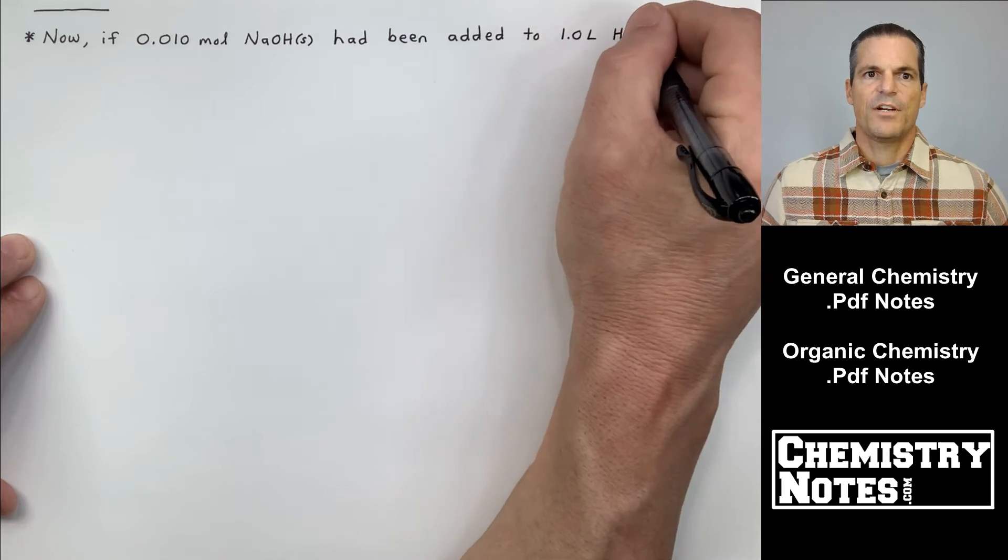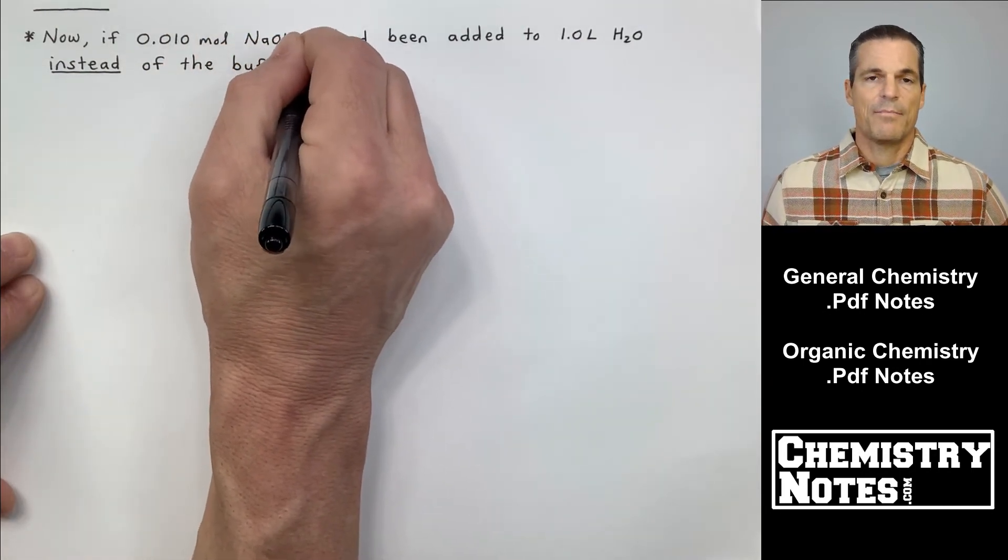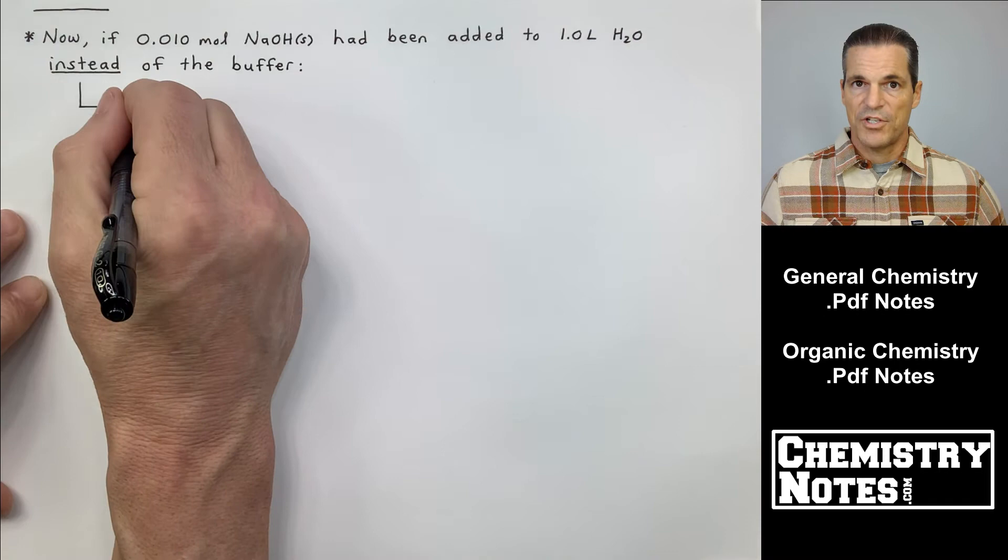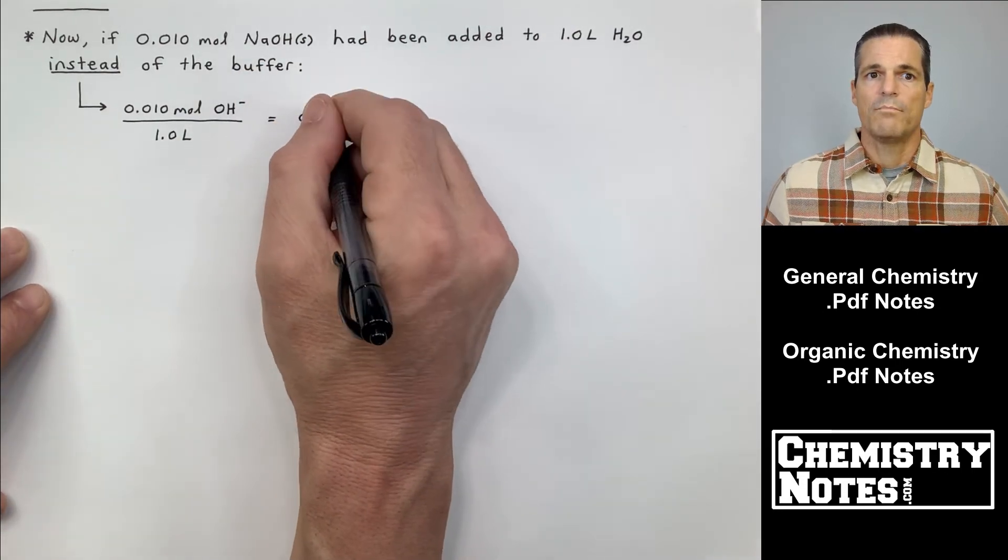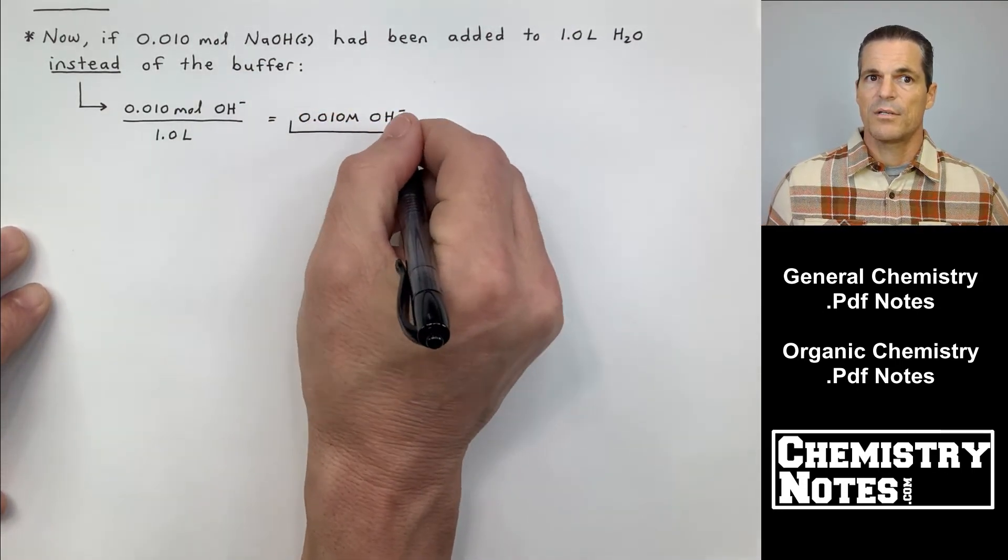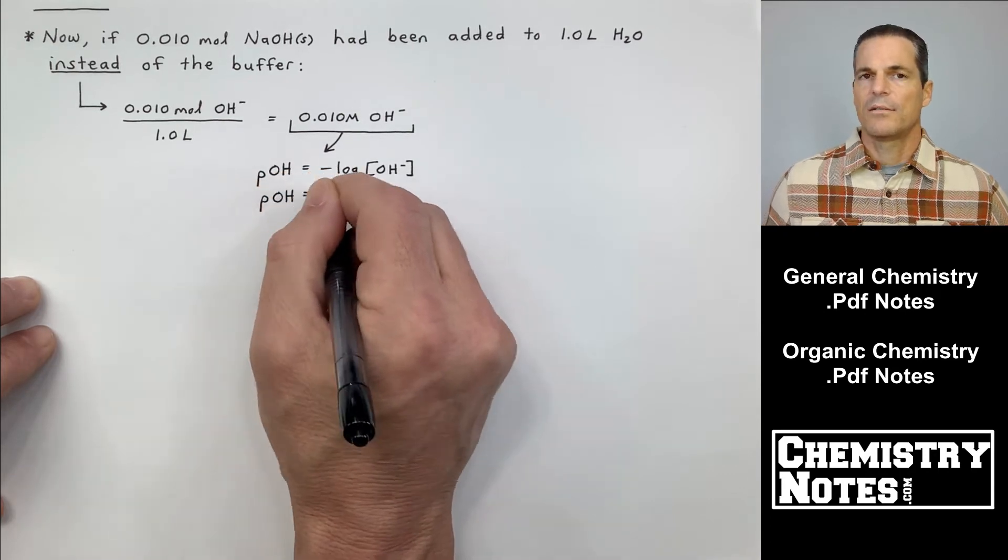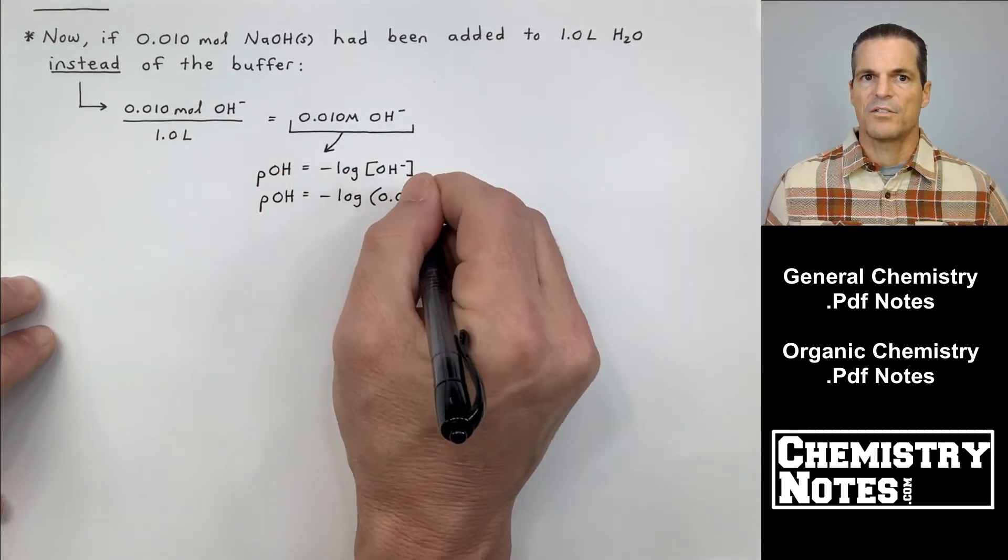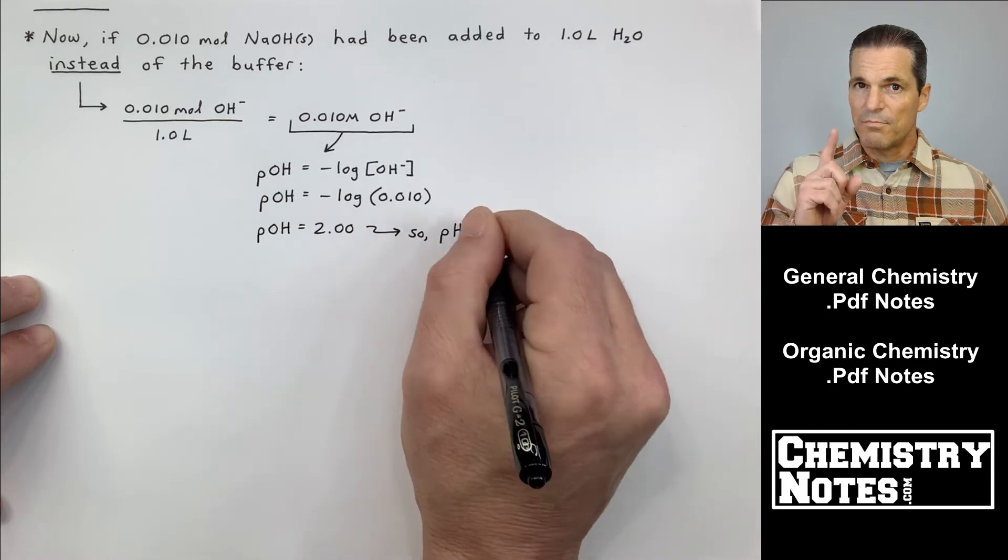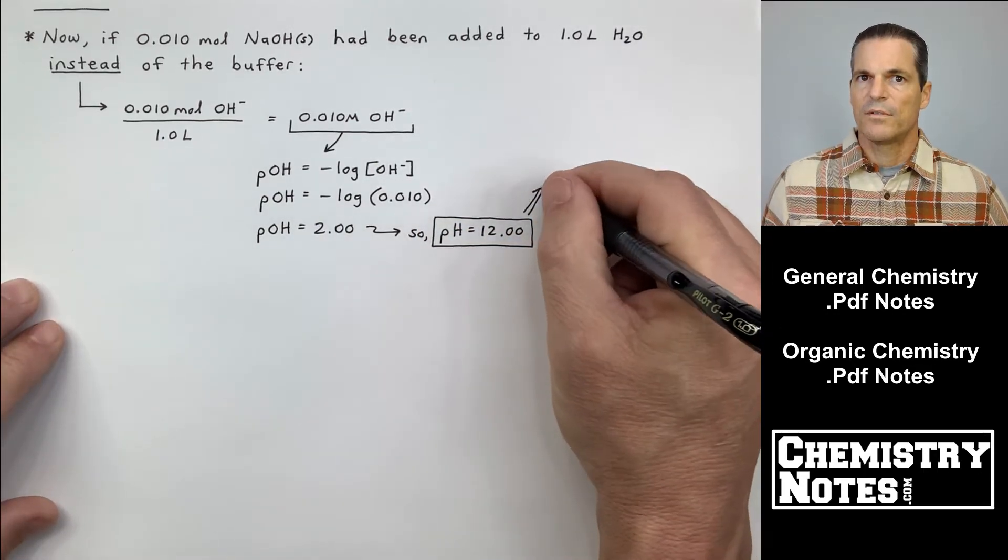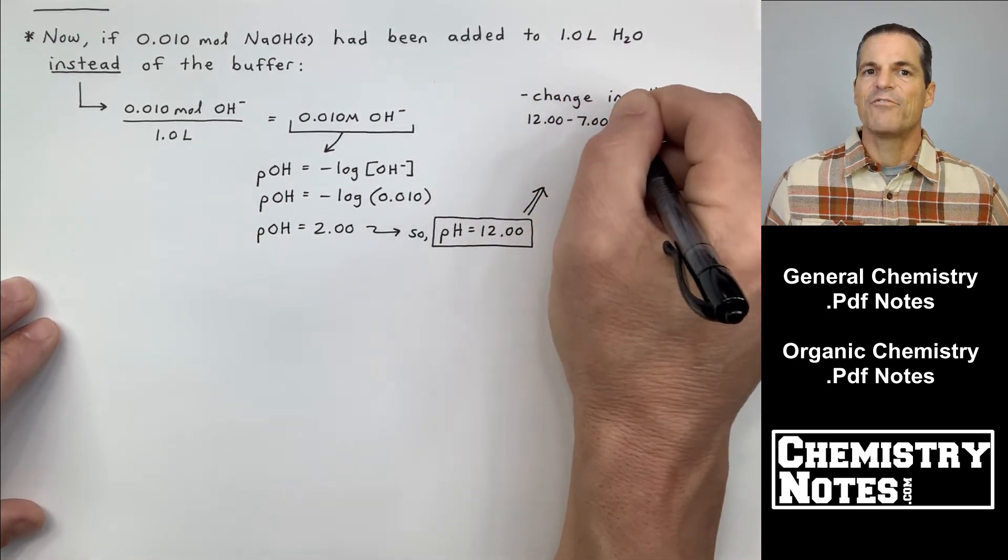Now, if 0.010 moles of NaOH had been added to 1 liter of water instead of the buffer, what would have happened? Well, the calculation is much easier. We have pure water, which is neutral, so all we have to really deal with is our OH-, 0.01 moles of OH- in a 1 liter solution, means my concentration is the same number, 0.010 molar OH-. Calculate the pOH directly from the OH- concentration. pOH is minus the log of OH-, the pOH ends up being 2.00, which means the pH is what? 12. Remember that? pH plus pOH equals 14.00. Wow.